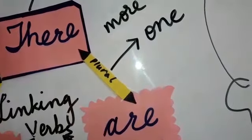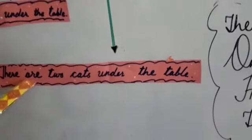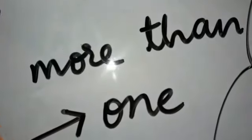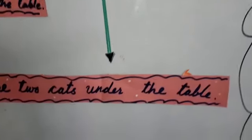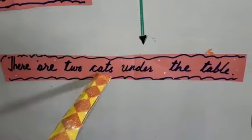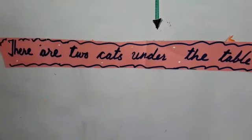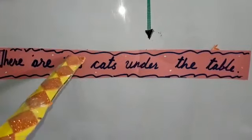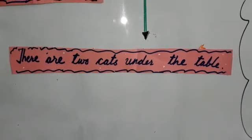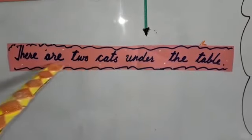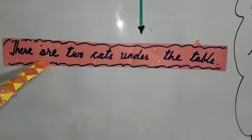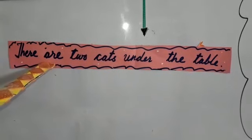Now let's come to 'are'. 'There are' — let's have an example. 'Are' shows more than one; it shows more than one noun. For example: 'There are two cats under the table.' How many cats? Two cats. Two means do, more than one. So the linking verb we used is 'are'. That means: 'is' shows singular and 'are' shows plural.